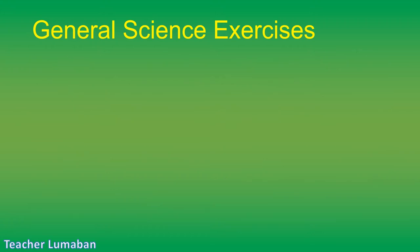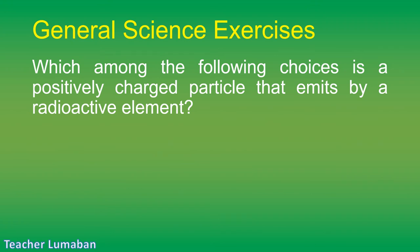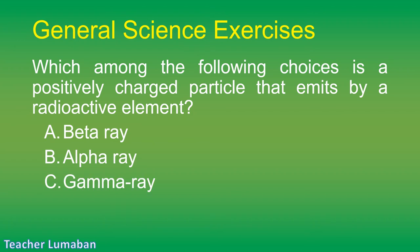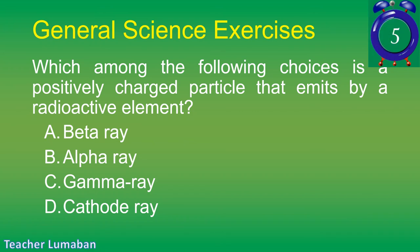Which among the following is a positively charged particle emitted by a radioactive element? Letter A: beta ray. Letter B: alpha ray. Letter C: gamma ray. Letter D: cathode ray.